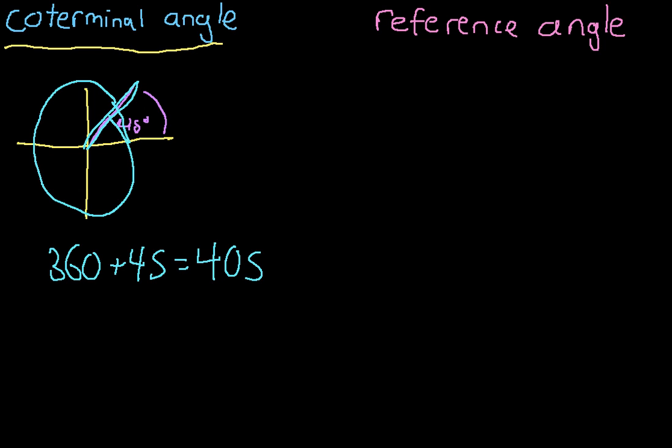Alternatively, we can do something similar. If I take 45 and I subtract 360 degrees, I would come up with negative 315. And the angle of negative 315, let's do this in this color right here, would also end up in the exact same place as the angle of 45.